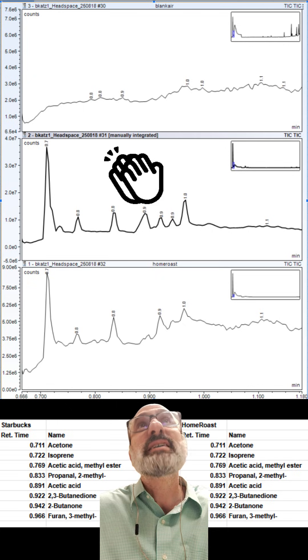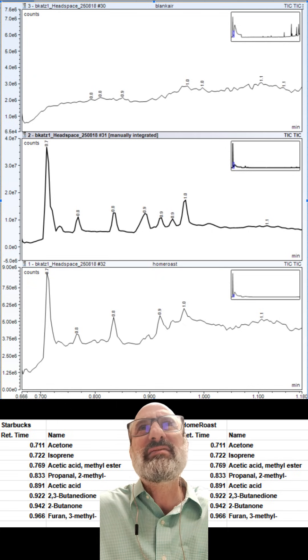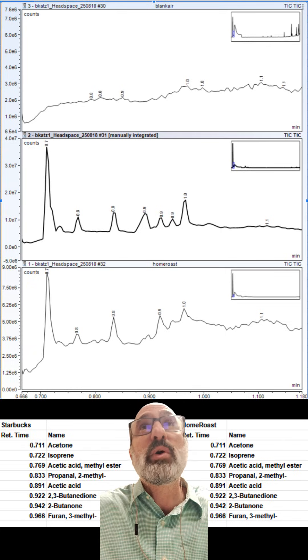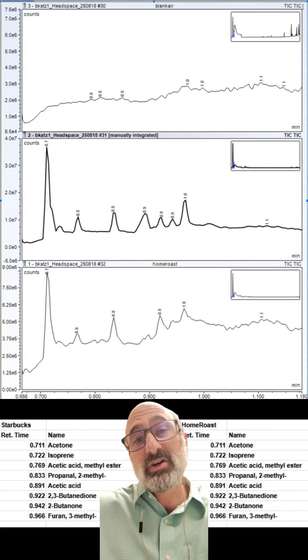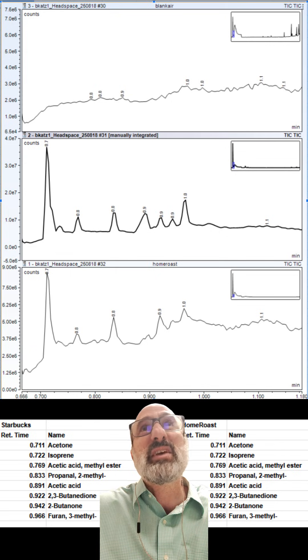So no DCM at detectable levels in the Starbucks. It's safe to drink. But we are seeing some similar solvents and interesting things in the solvent fraction for both the home roast and the Starbucks. So whatever they're doing to remove the caffeine is not really affecting the volatiles that much. We basically got all the same things.